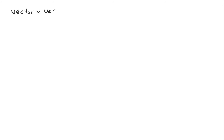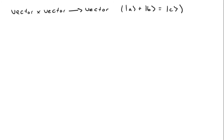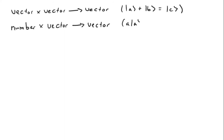So far we have an operation that takes two vectors and produces a new vector, and that's addition. So we can add two vectors together and get a third vector. And we have an operation that takes a number and a vector and produces a vector — this is multiplying a vector by a number, which gives another vector.